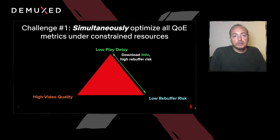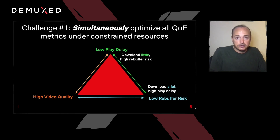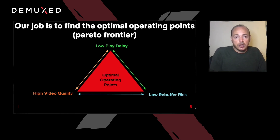To illustrate this: if you want to start quickly, you just download a small amount of content, but the risk of rebuffers increases. On the other side, if you want to avoid rebuffers, you will have to download a lot of content before starting playback, but your play delay will be much higher. The same kind of trade-offs also apply between the other pairs of metrics. The best configuration is subjective — some might prefer playback starts quickly with low video quality, while others might prefer higher initial quality even if playback takes longer. Our job is then to find the set of best configurations, or optimal operating points, also called the Pareto Frontier.